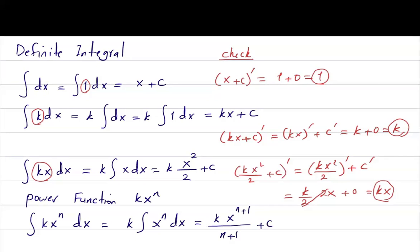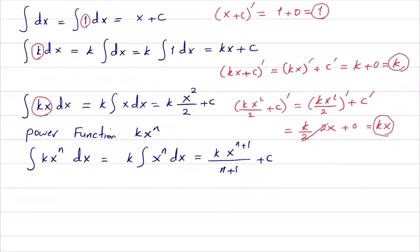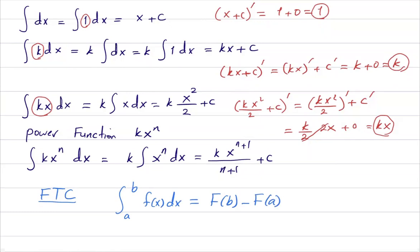For the topic of definite integrals, we are using the Fundamental Theorem of Calculus. The Fundamental Theorem of Calculus states that the definite integral from a to b of function f of x dx can be written as F of b minus F of a, where F prime equals f, as we checked in previous examples. Basically, to find the definite integral, you just plug in b, then plug in a, and do the subtraction.